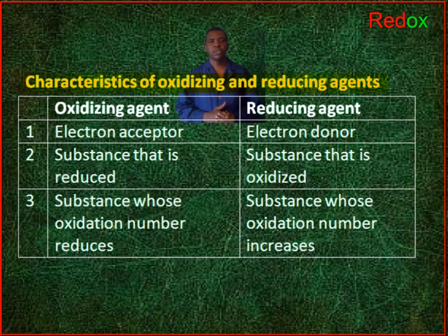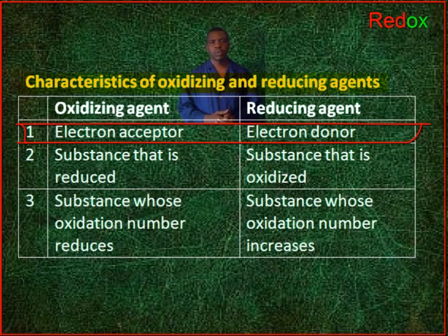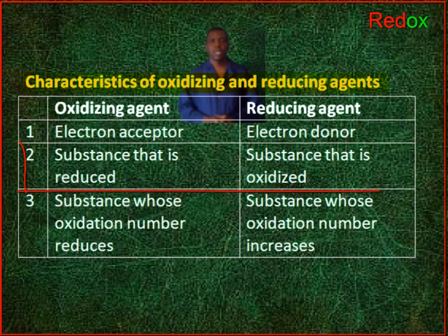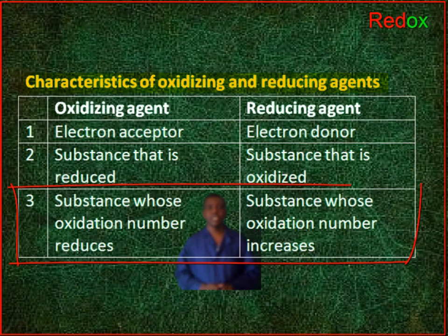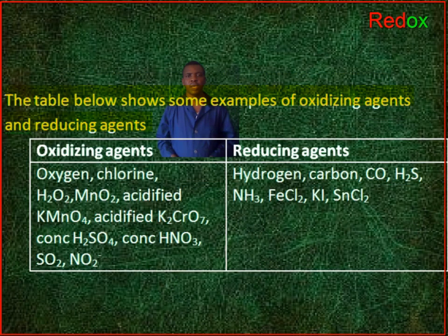Characteristics of oxidizing and reducing agents. An oxidizing agent is the electron acceptor, while the reducing agent is the electron donor. An oxidizing agent is a substance that is reduced, while a reducing agent is a substance that is oxidized. The oxidizing agent is the substance whose oxidation number decreases, while the reducing agent is the substance whose oxidation number increases. The table here shows some examples of oxidizing and reducing agents.